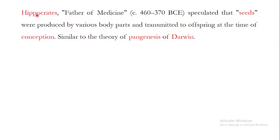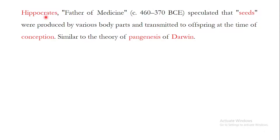Hippocrates, known as the father of medicine, speculated that seeds are produced by various body parts and transmitted to offspring at the time of conception. Darwin's theory of pangenesis is mostly based on this observation from Hippocrates, where Darwin used the term pangenes. Hippocrates believed that seeds are produced by various body parts and then transmitted to offspring at the time of conception.